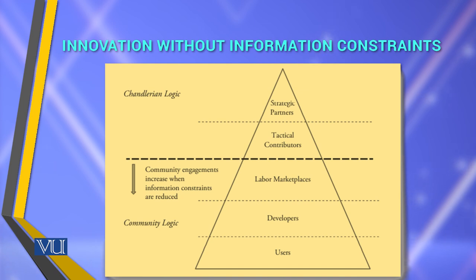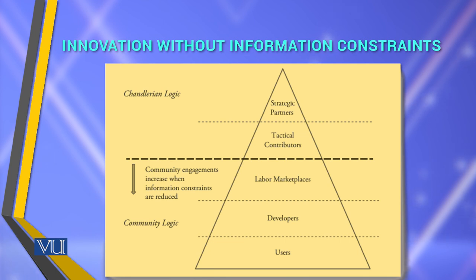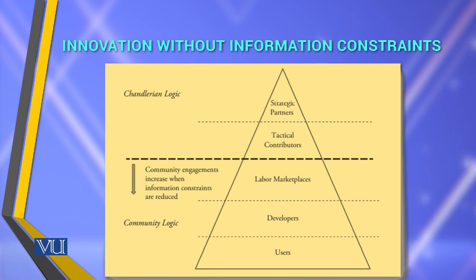Coming out of that, it goes to the strategic partner, technical contributors, labor marketplace, developers, and users. Ultimately, it is comprised of community engagement, which increases when information constraints are reduced — so that community engagement increases. This is the whole crux of the matter.